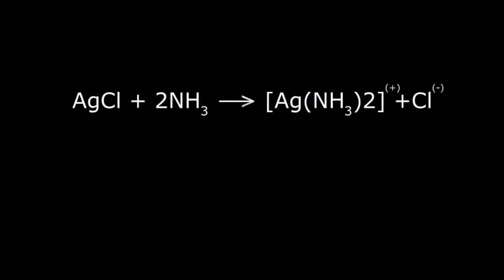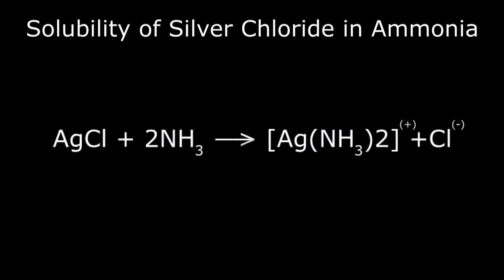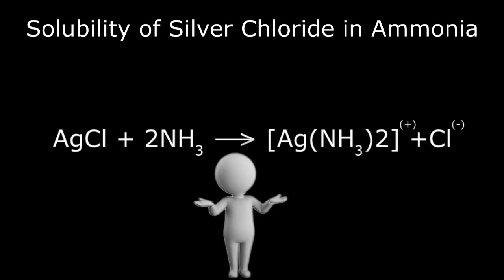Basically, the sequence describes the solubility of silver chloride in ammonia, but on the surface doesn't seem to follow the usual rules of covalent bonding that we see in a balanced chemical equation.